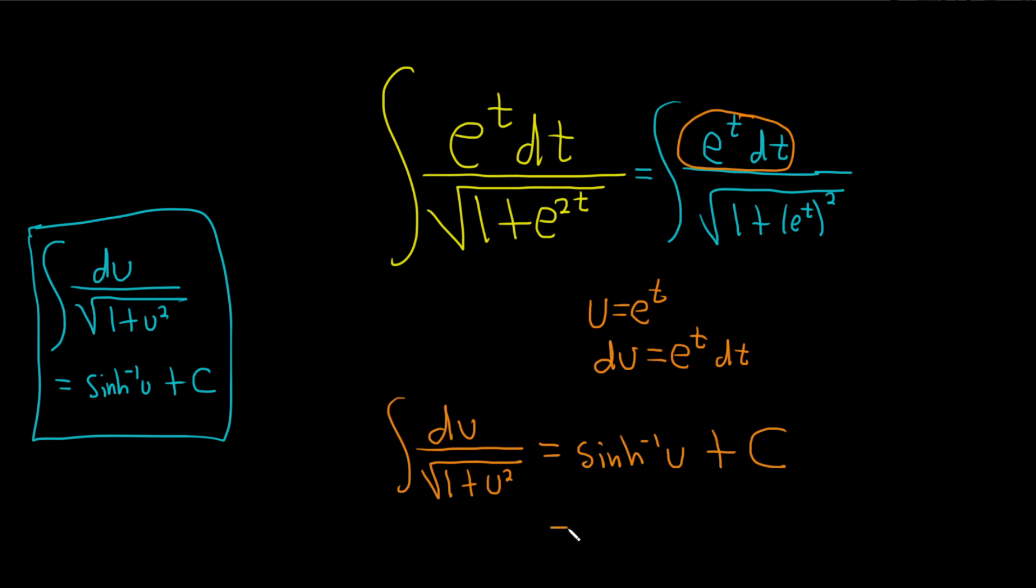And now the last thing to do is replace u with what it is. This is sinh inverse of e to the t plus our constant of integration capital C. And that would be the final answer.